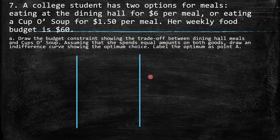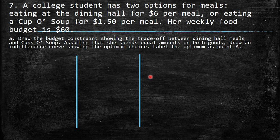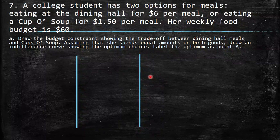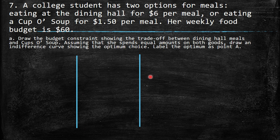So the first question says: a college student has two options for meals — eating at the dining hall for $6 per meal, or eating a cup of soup for $1.50 per meal. Her weekly food budget is $60. Part A: draw the budget constraint showing the trade-off between dining hall meals and cups of soup. Assuming that she spends equal amounts on both goods, draw an indifference curve showing the optimum choice. Label the optimum as point A.